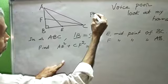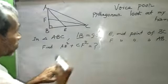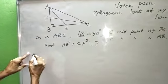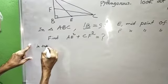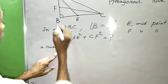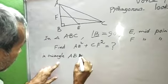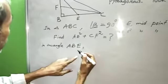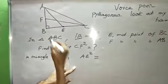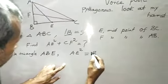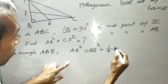Using the Pythagorean theorem. In triangle ABE, AE square equal to AB square plus one by four BC square.